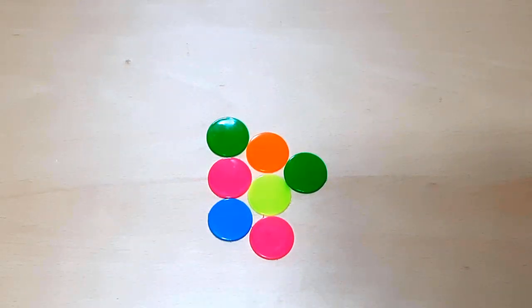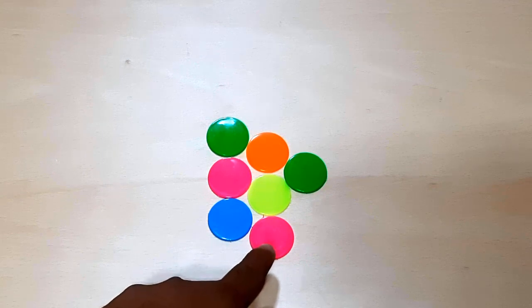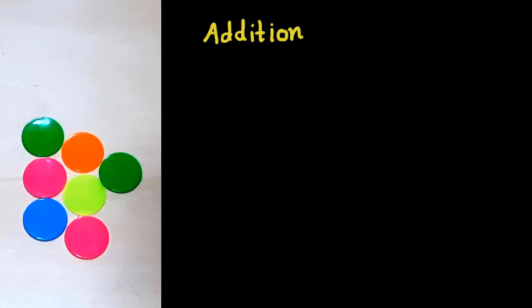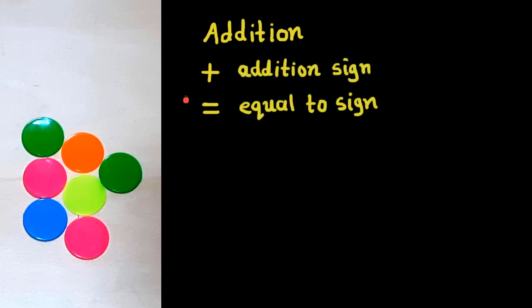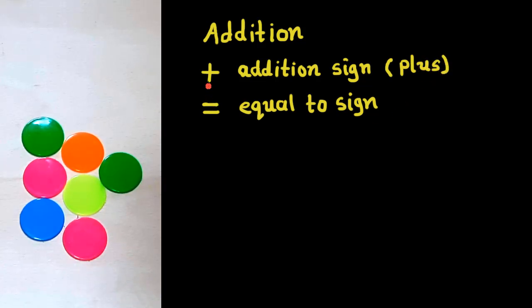First of all, we had 6 coins. Then we add this one more coin. Now we have 7 coins. And friends, in mathematics, we can show this as addition. And for that, we can use these two symbols. This is the symbol that shows addition, and we can say it as plus. So, 6 plus 1 is equal to 7. See friends, this is a sign which shows equal.